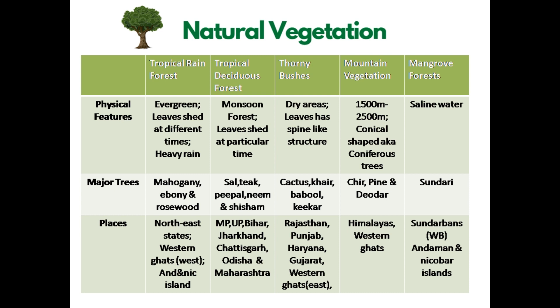Tropical deciduous forests are found in Madhya Pradesh, Uttar Pradesh, Bihar, Jharkhand, Chhattisgarh, Odisha and some parts of Maharashtra. Next come thorny bushes, which have a spine-like structure and are seen in dry areas like deserts. Important species include cactus, khair, babul and khejri. They are found in Rajasthan, Punjab, Haryana, Gujarat and to the east of the Western Ghats.